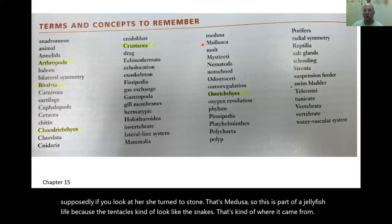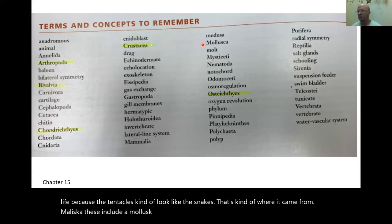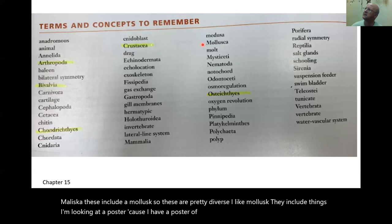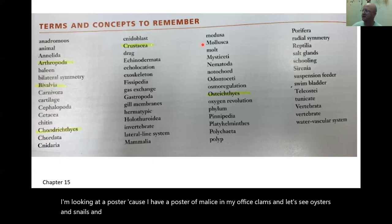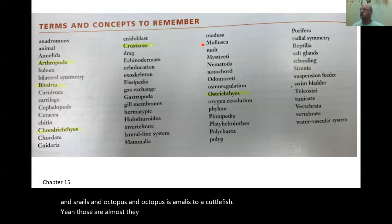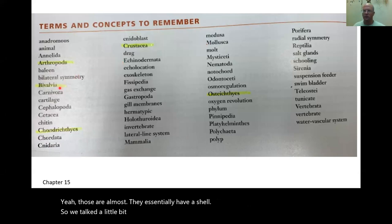Mollusca includes mollusks, which are pretty diverse. Clams, oysters, snails, octopus, cuttlefish — those are all mollusks. They essentially have a shell. Bivalves, which we talked about earlier, are a type of mollusk.